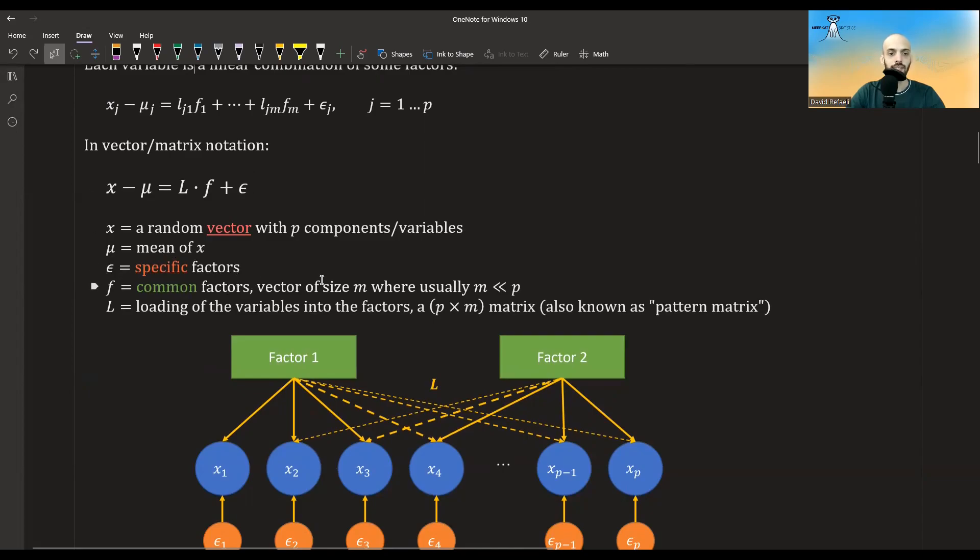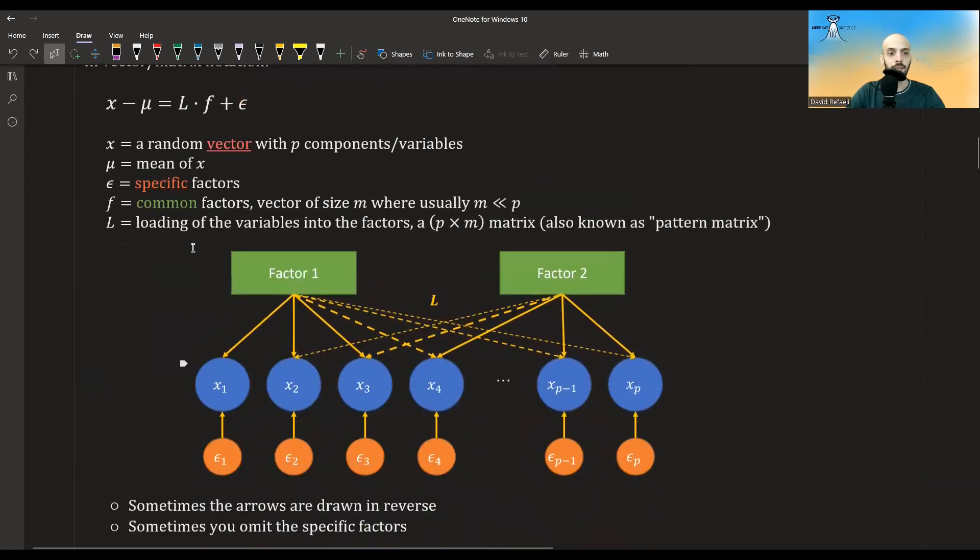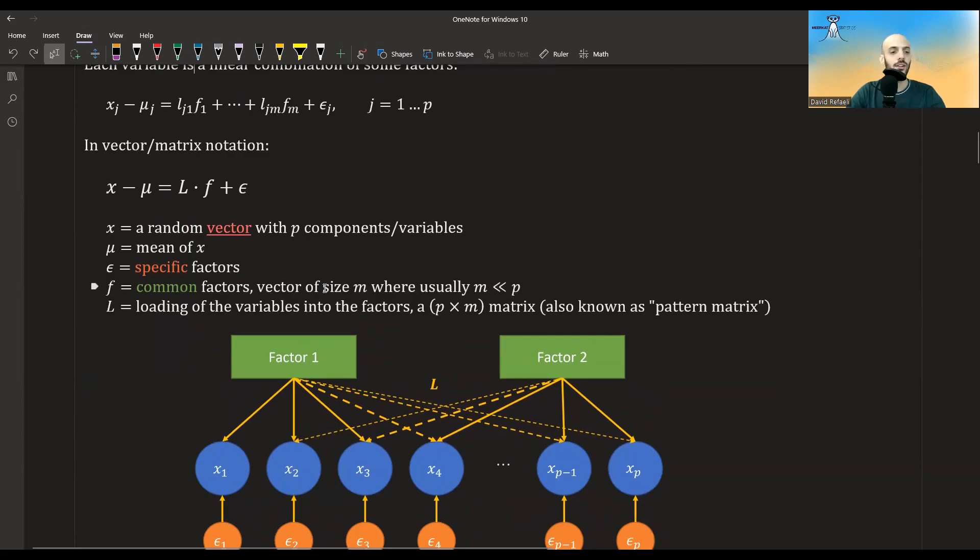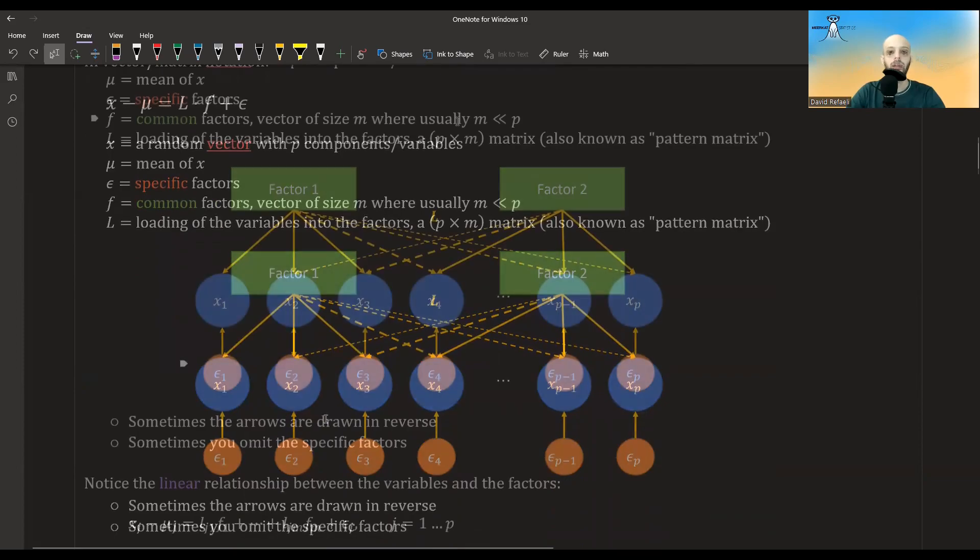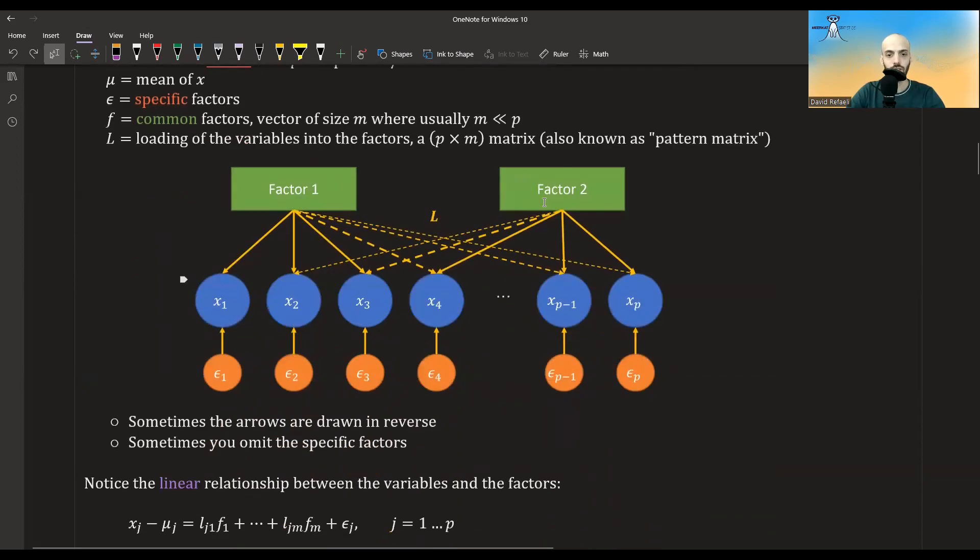F are the common factors. This is a vector of size M. Usually M again is much smaller than P. And L is this matrix of coefficients, which we call the loading matrix, also known as the pattern matrix. And basically, it's how much each variable loads into the factor, or vice versa, how much each factor affects each variable.